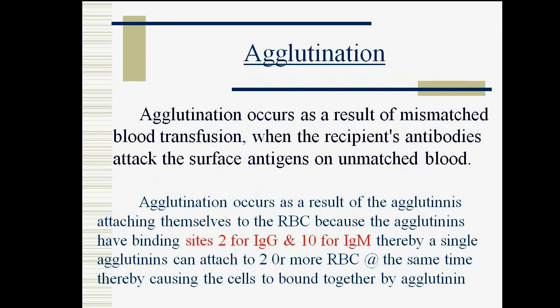Agglutination occurs as a result of mismatched blood transfusion, when the recipient's antibodies attack the surface antigens on unmatched blood. Agglutination occurs as a result of agglutinins attaching themselves to the RBCs. Because agglutinins have binding sites — 2 for IgG and 10 for IgM — a single agglutinin can attach two or more RBCs at the same time, causing the cells to clump together by agglutination.